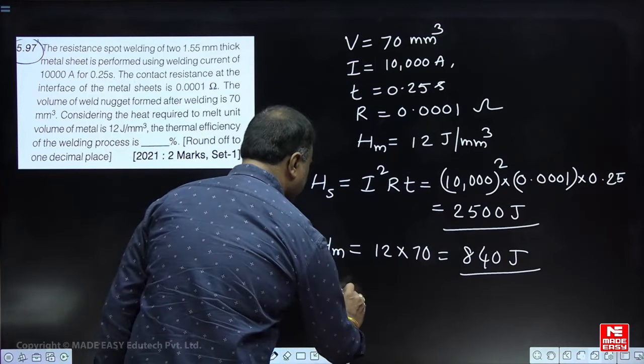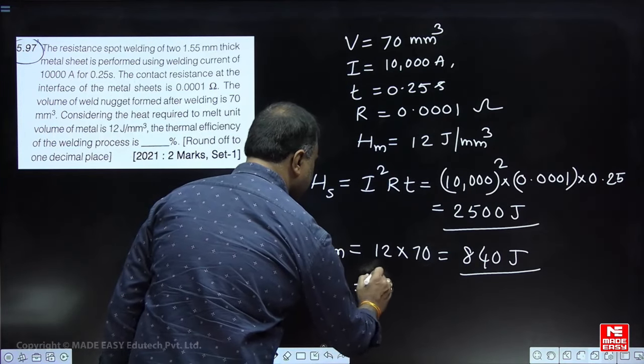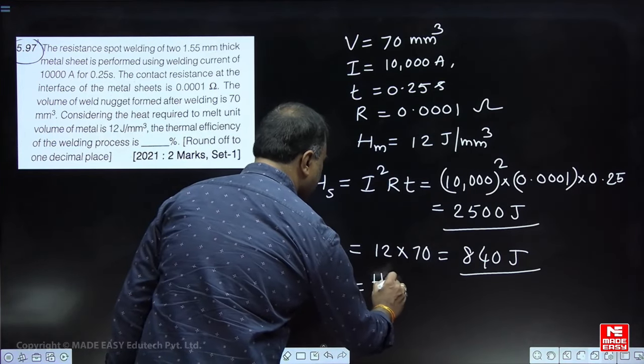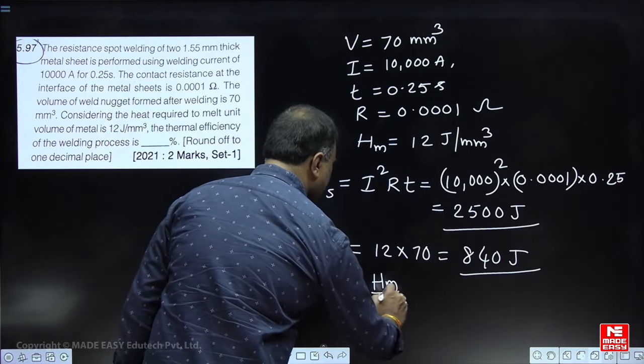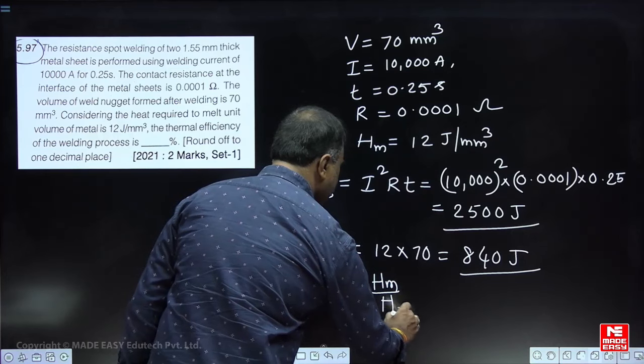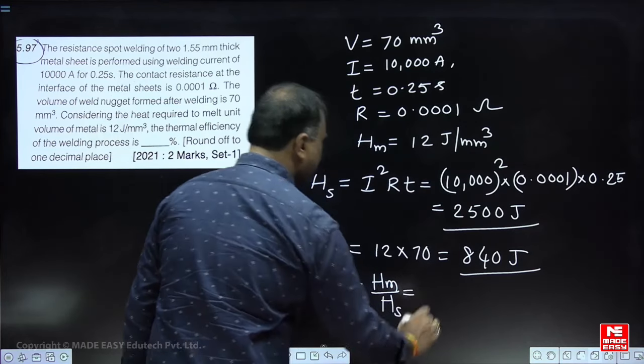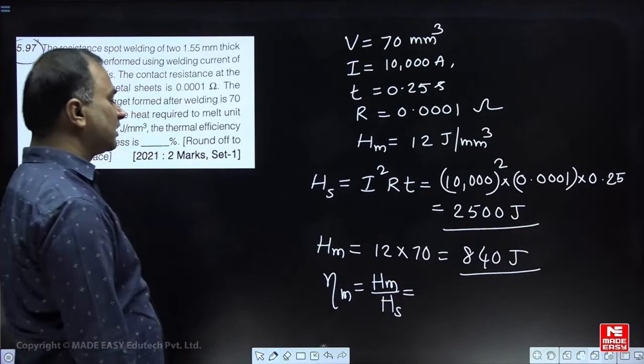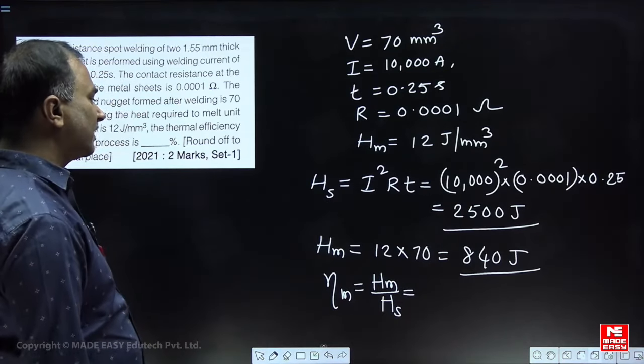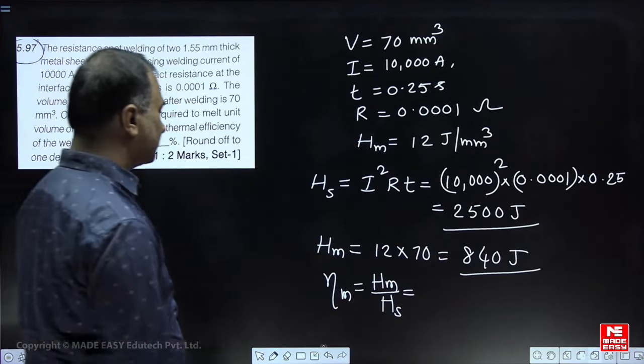Melting efficiency (thermal efficiency) = heat required to melt / heat supplied = 840 / 2500 × 100 = 33.6%. So the thermal efficiency of this resistance spot welding process is 33.6 percent.